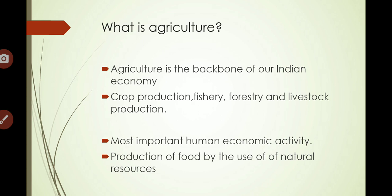Agriculture involves the optimum use of natural resources such as land and water. The purpose of modern, sustainable agriculture is to use our limited resources judiciously. This applies not only in India but outside India as well. This is what agriculture is. Thank you.